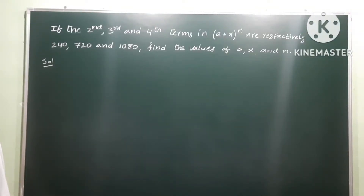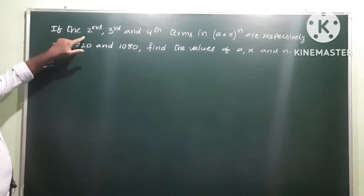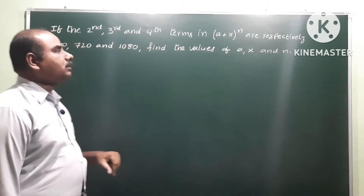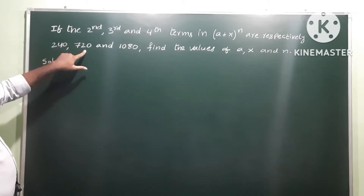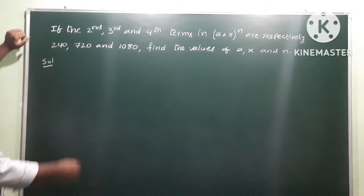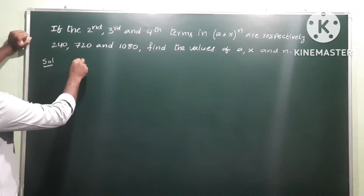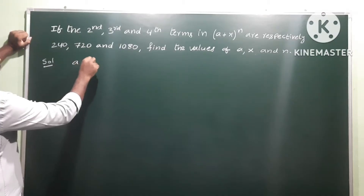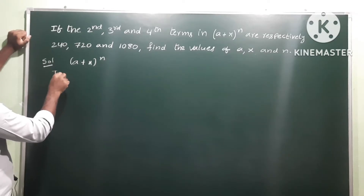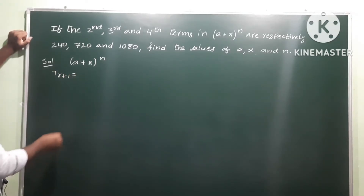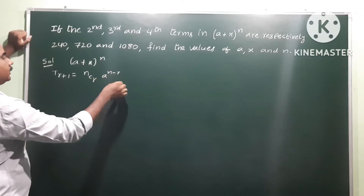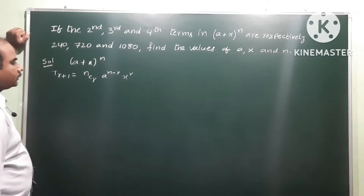The next problem is on the binomial theorem. If the second, third and fourth terms in (a + x)^n are respectively 240, 720 and 1080, find the values of a, x and n. Given binomial: (a + x)^n. The general term is T(r+1) = nCr · a^(n−r) · x^r.